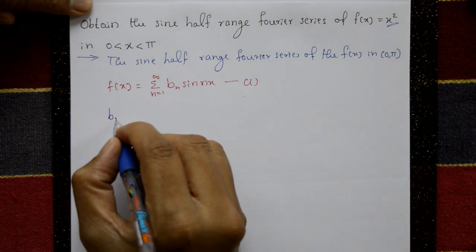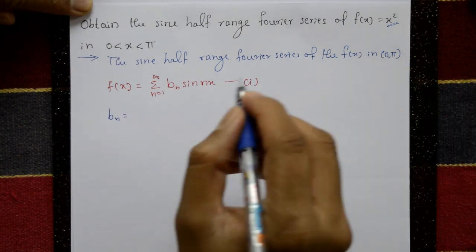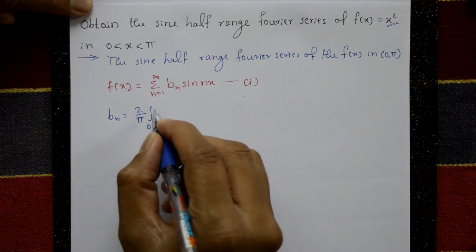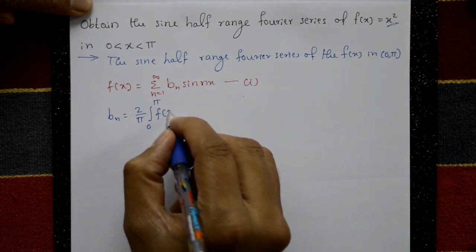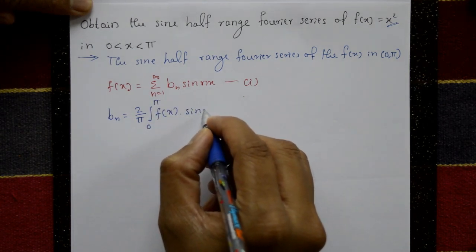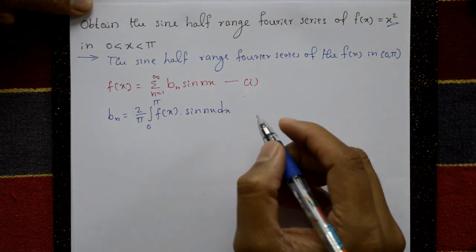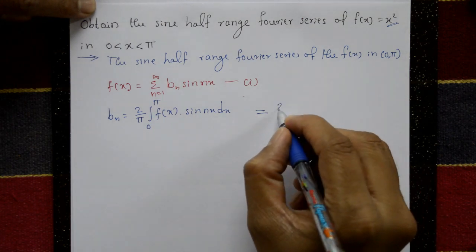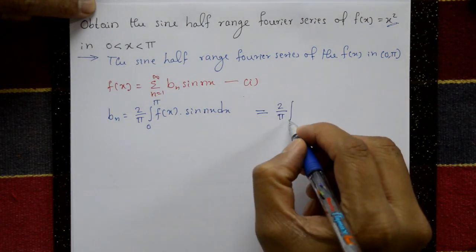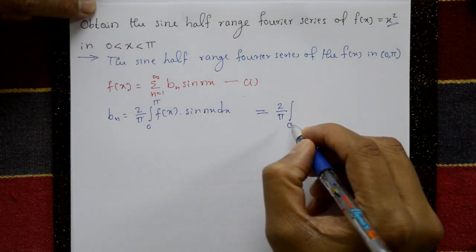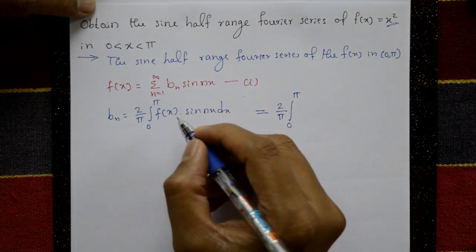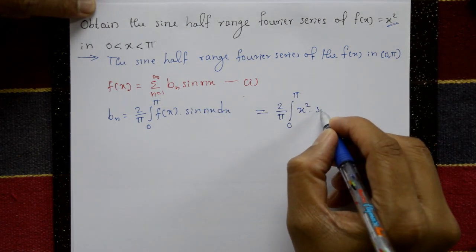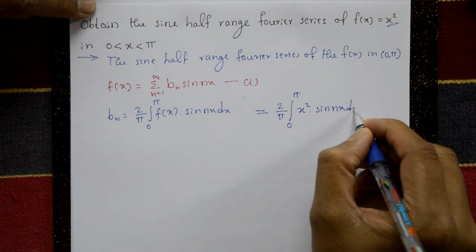The coefficient bₙ is equal to (2/π) times the integration from 0 to π of f(x) · sin(nx) dx. Here f(x) = x², so bₙ = (2/π) integration from 0 to π of x² · sin(nx) dx.